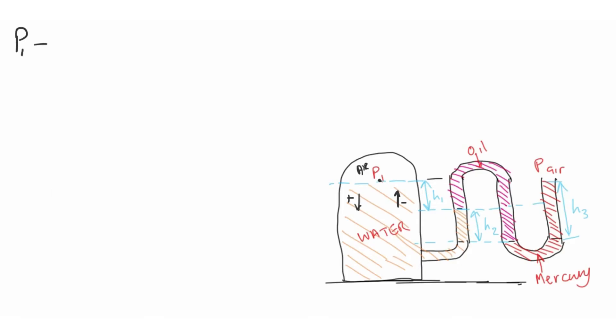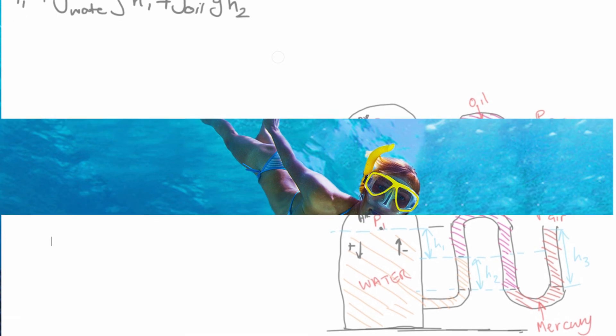So P1 plus rho of the water times g times h1. Then we add again because we're going down. So rho of the oil times g times h2. To help you grasp the concept of adding as we go down, think about a diver.